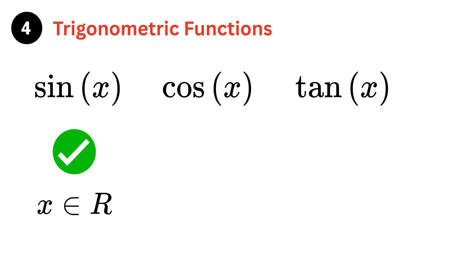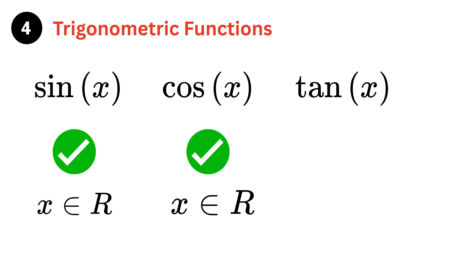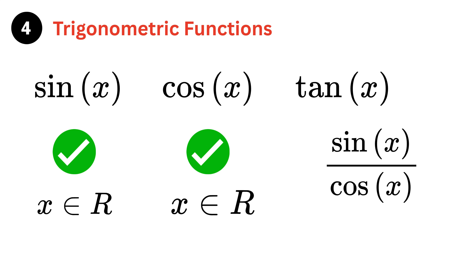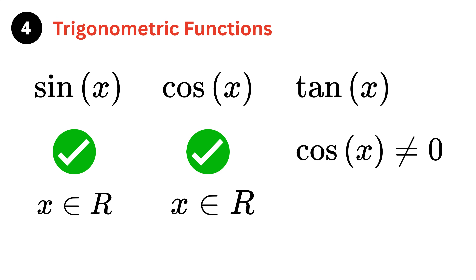Next we have trigonometric functions. Sine of x is defined for all real values, so there's no problem. Cosine of x is also defined for all real values. However, tan(x) equals sine(x) divided by cosine(x), and division by zero is not allowed, so tan(x) is undefined whenever cosine(x) equals zero.